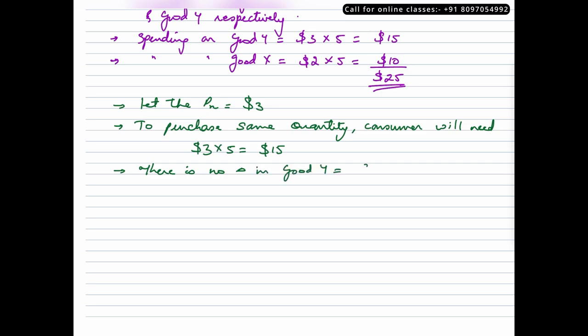So the expense in good Y will still remain at $15. That is consumer now needs $30 to buy the same combination. But how much is his total income? His total money income is $25. That means this indicates that income of consumer has to be raised.